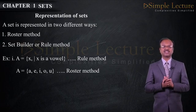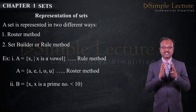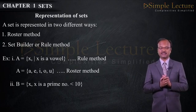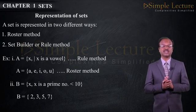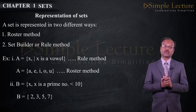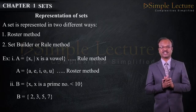Take the second example: Set B is equal to x such that x is a prime number less than 10. Now set B is equal to {2, 3, 5, 7} which is the roaster method of representing the set.